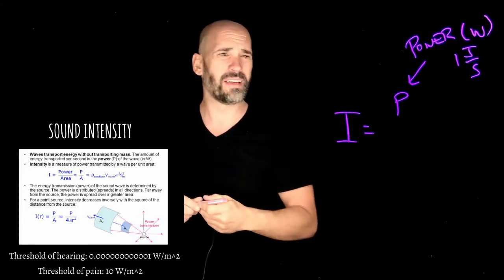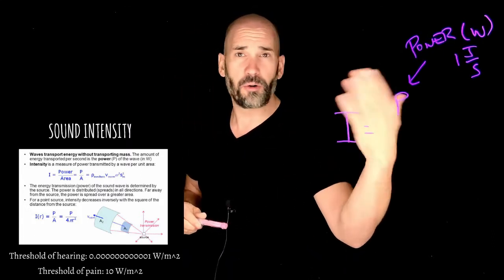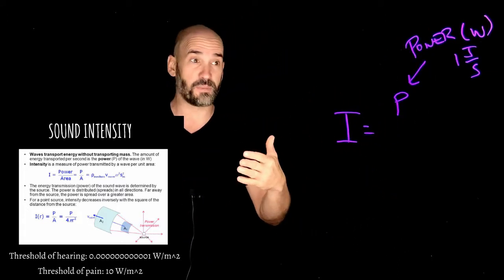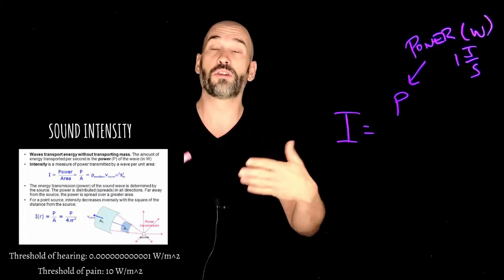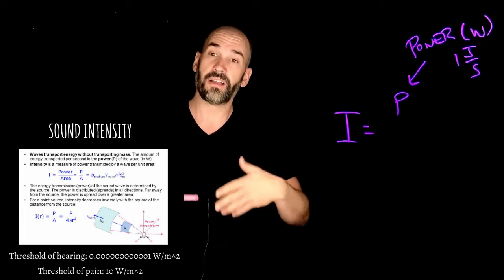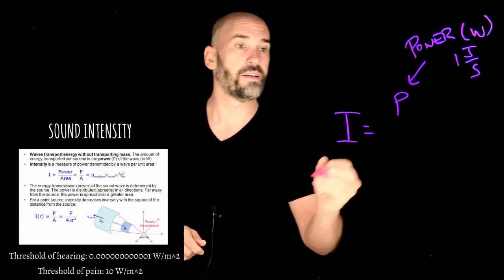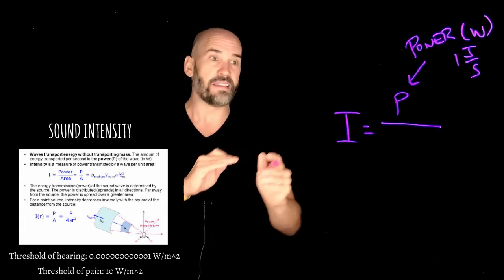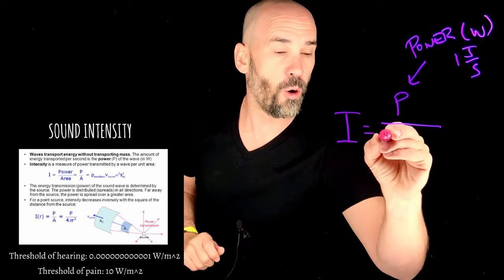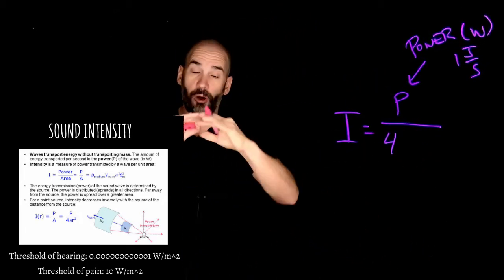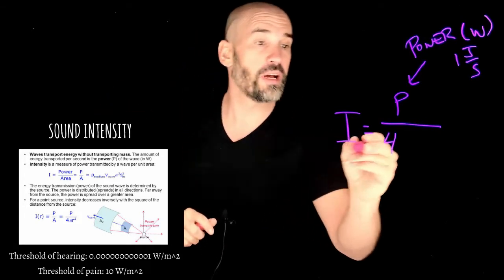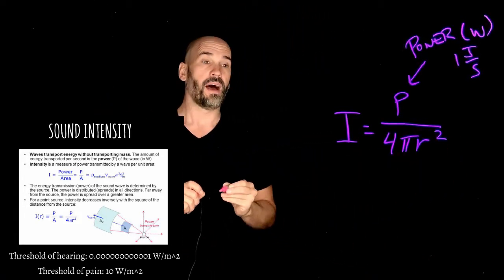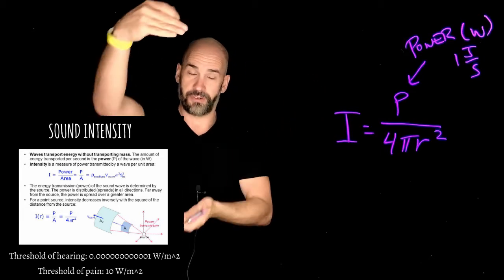You've probably heard of a 100-watt speaker — that means the speaker is able to generate 100 joules of energy for every second that it's playing. And so that power is then distributed over the surface area of a sphere, which is 4πr², and that is the surface area of a sphere.